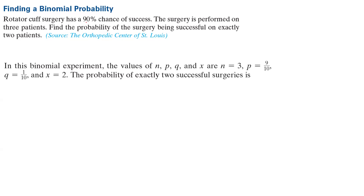In this binomial experiment, the values are as follows: n equals 3, because we have three patients. The probability of success P is 90%, or 9 over 10. The probability of failure Q is 1 minus 90%, which is 10%, or 1 over 10. And X, which counts the number of successful surgeries, is 2.